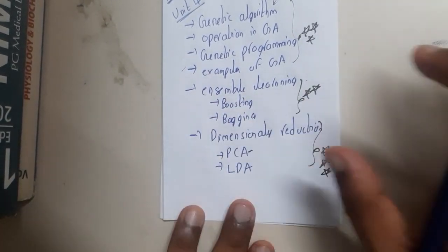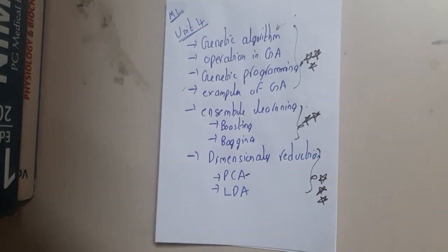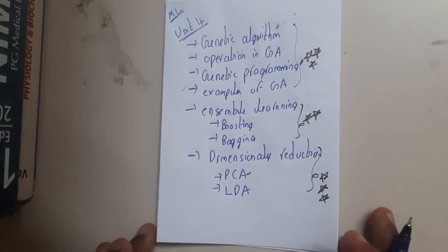After that, the ensemble learning. Basically go through each and every topic guys. The subject Machine Learning is having really less topics. Even the videos will be around 60 to 70 at max.